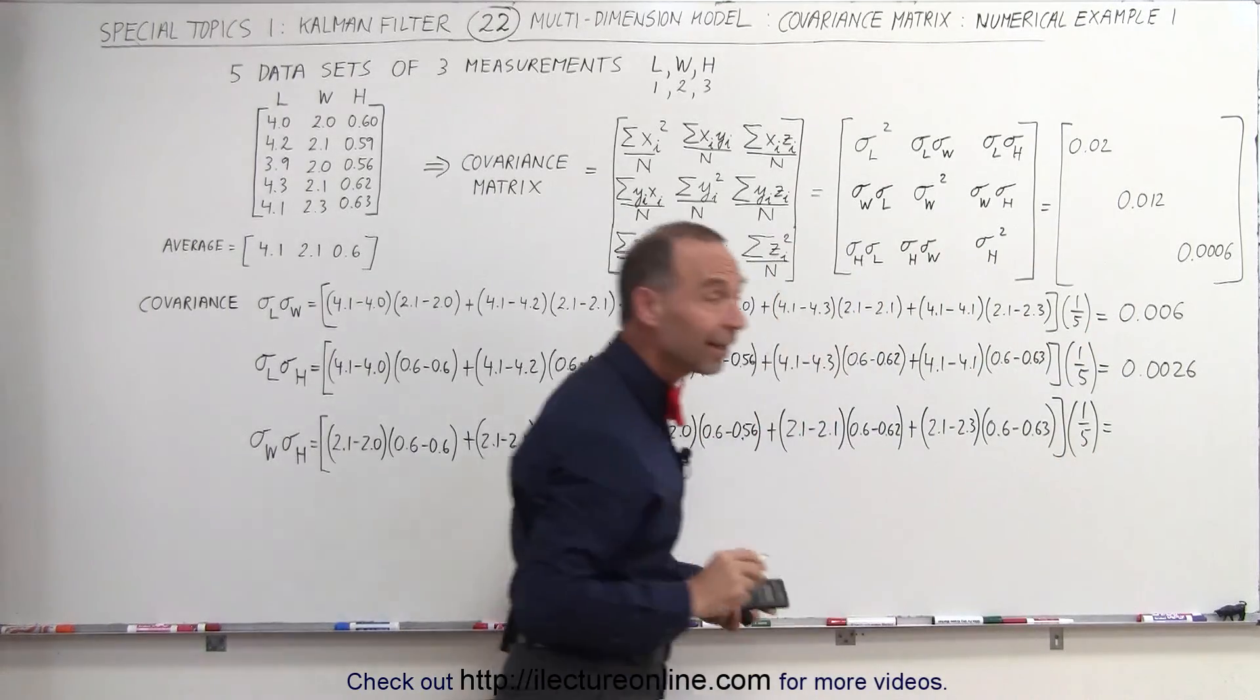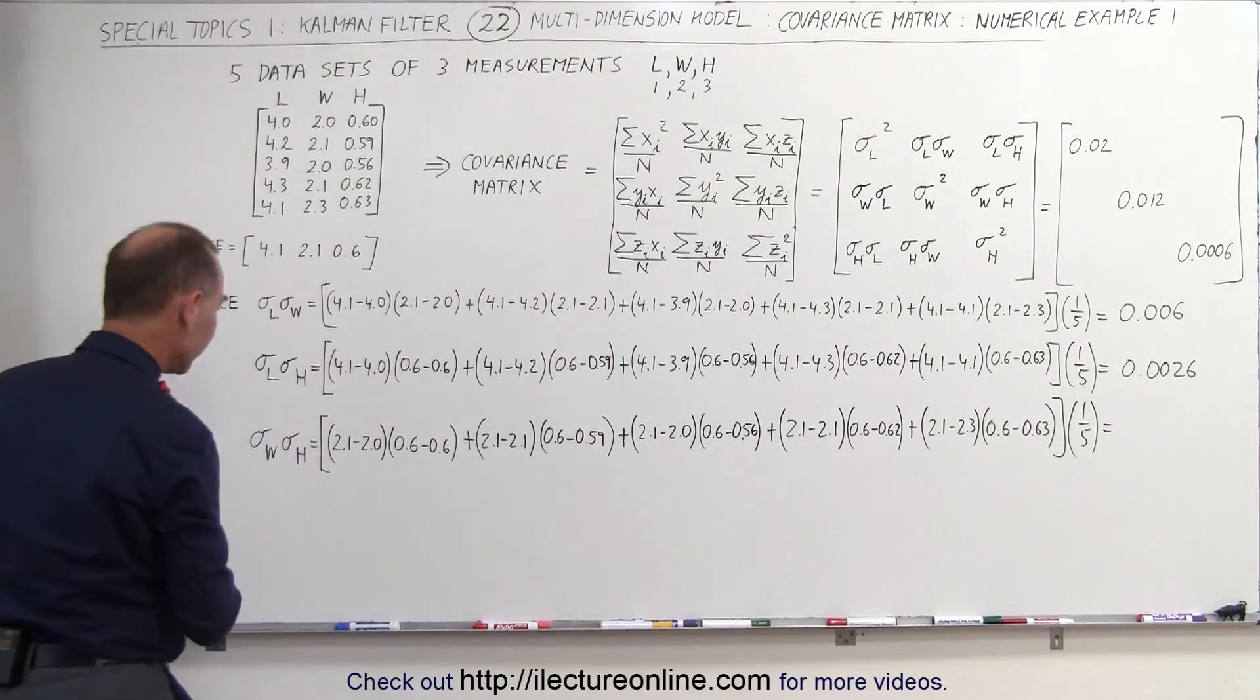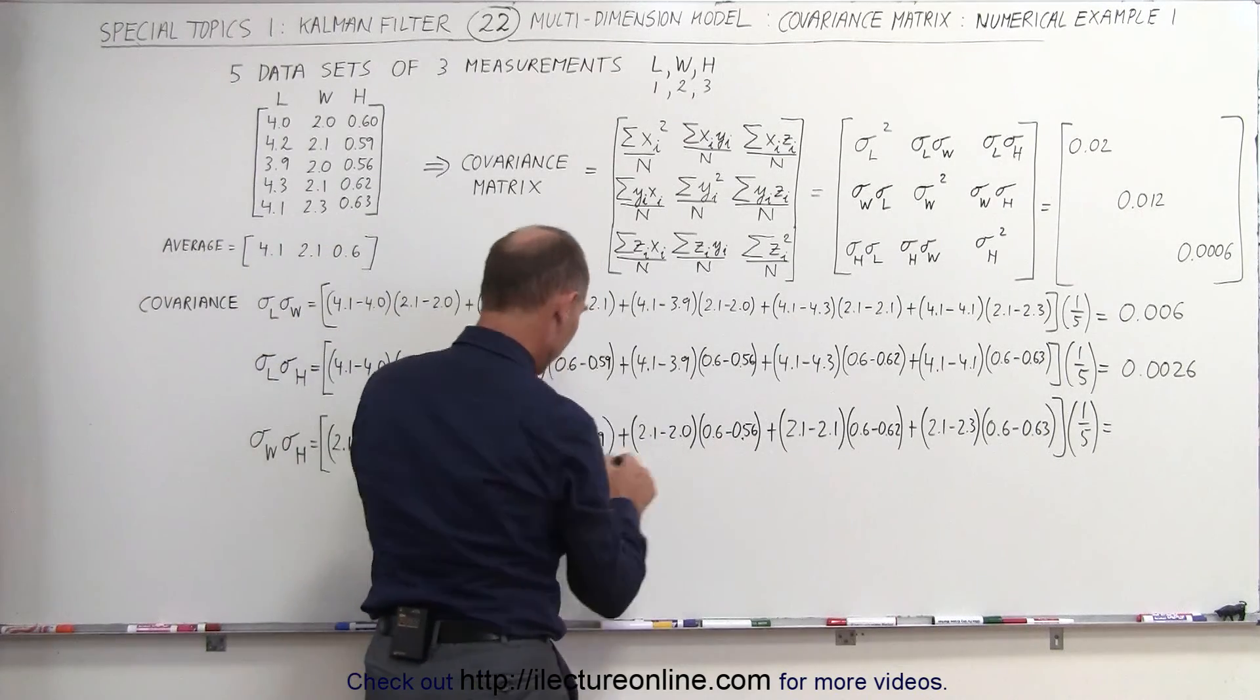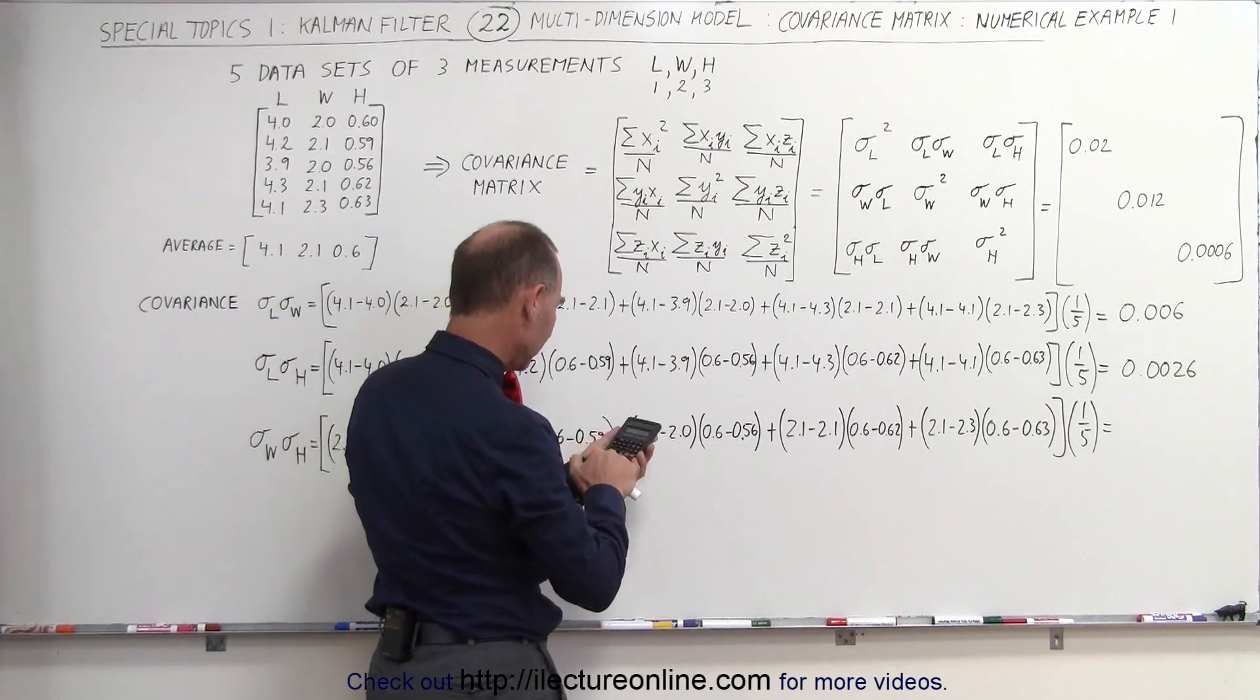All right, the last one. This will be 0, this will be 0, and here we get 0.1 times 0.04.